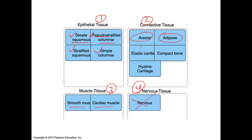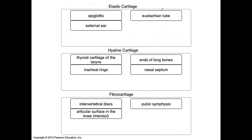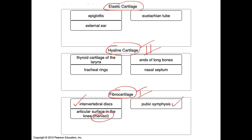Under connective tissue: areolar and adipose fall under loose connective tissue proper. Elastic cartilage, compact bone, and hyaline cartilage fall under supporting connective tissue. Fibrocartilage is the strongest cartilage in the body — these are type 1 collagen fibers, whereas hyaline cartilage has type 2 fibers. The strongest ones are found in the intervertebral discs, the menisci of the knee, and the pubic symphysis.